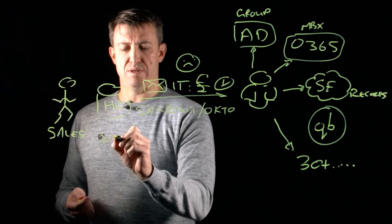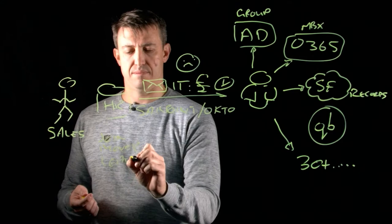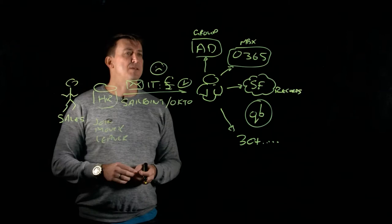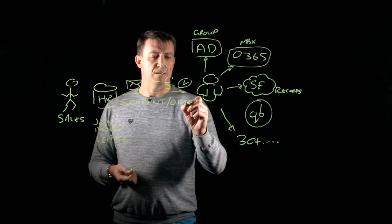This is commonly referred to as the joiner, mover and leaver process within the organization. The joiner kind of speaks for itself. So when we get a new user who joins the company, we need to go and set up his initial application access and all of his permissions. And with a product like SailPoint and Okta, we can automate that entire process.